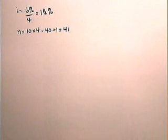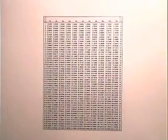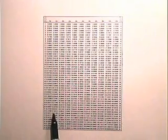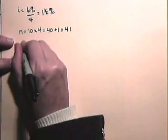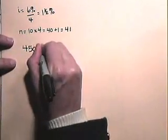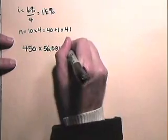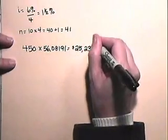Next, we will find 1.5% for 41 periods in the table. So let's go to the amount of an annuity table. Let's look down the column headed 1.5%, go down to 41, and we get the value 56.08191. We multiply the quarterly contribution $450 times 56.08191 to obtain $25,236.86.